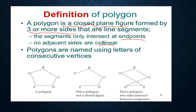That means no two sides should lie on the same line, or the angle between adjacent sides should not be 180 degrees. So a polygon is a closed plane figure formed by three or more sides that are line segments. Polygons are named using the letters of consecutive vertices. This figure is the polygon because it is a closed plane figure — closed means all the sides intersect at the end points, and it is a two-dimensional figure formed by three or more sides.